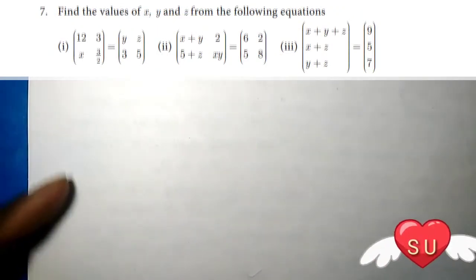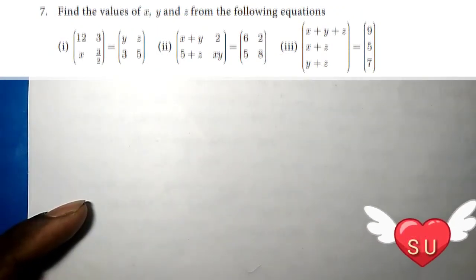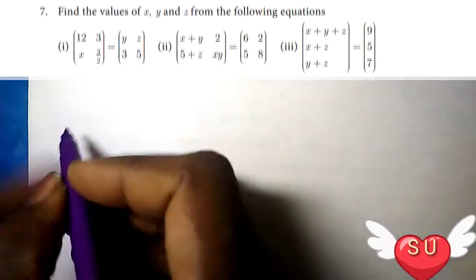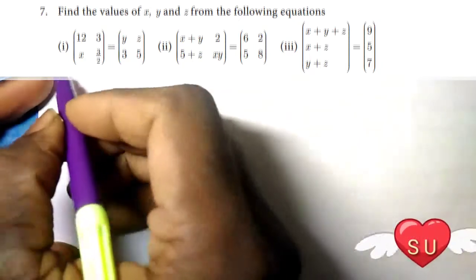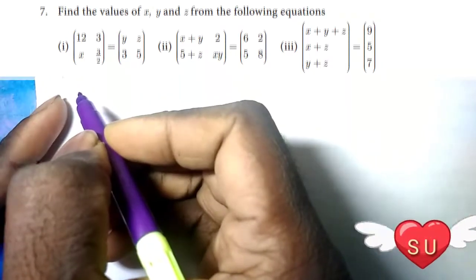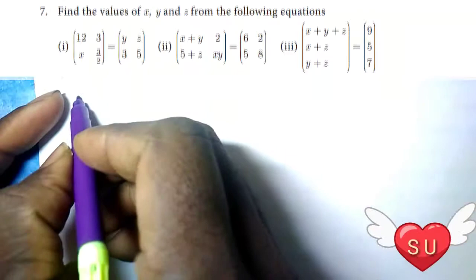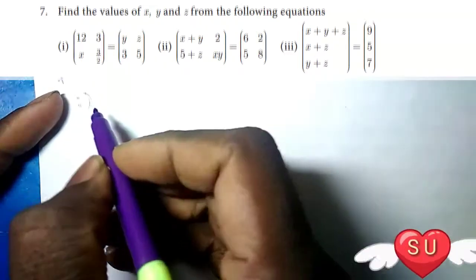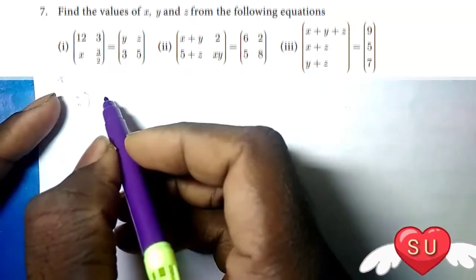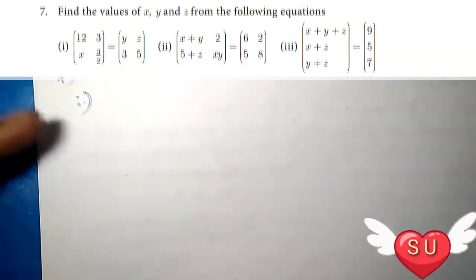Hi friends, welcome, this is Hattie. In this video we are going to talk about exercise 3.16, problem 7. The first sum is going to be 5 x y z.